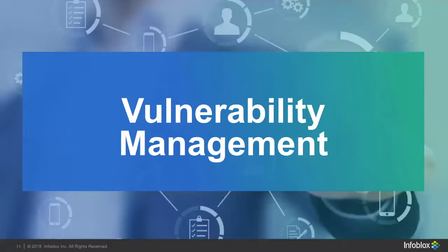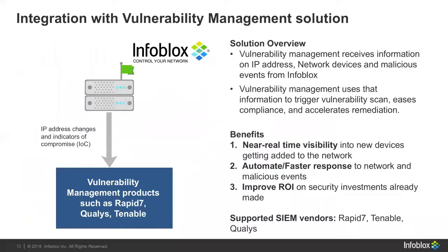You also have vulnerability management tools such as Rapid7 and Tenable or Qualys. If you have any of those in your security team, you can push information such as the IP and let them know automatically — hey, somebody's trying to access a bad domain, or there's something suspicious going on with data exfiltration through DNS — and immediately start a scan through something such as Rapid7.